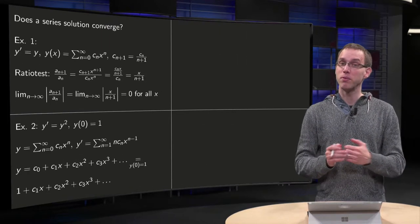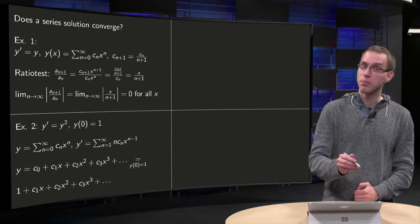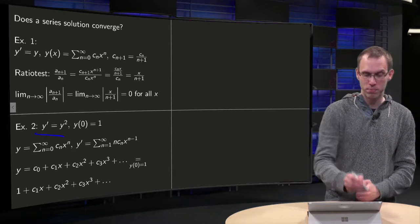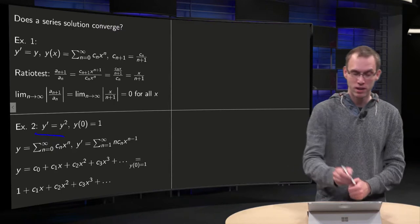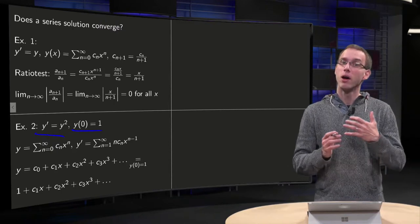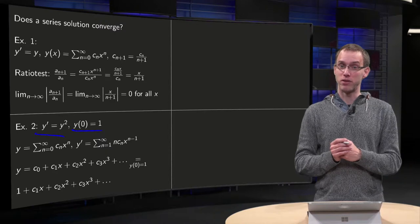Let's now look at a second example, which is less trivial. What happens if we try to solve y prime equals y squared? Take some initial value, y zero equals 1. Let's use the power series method first.